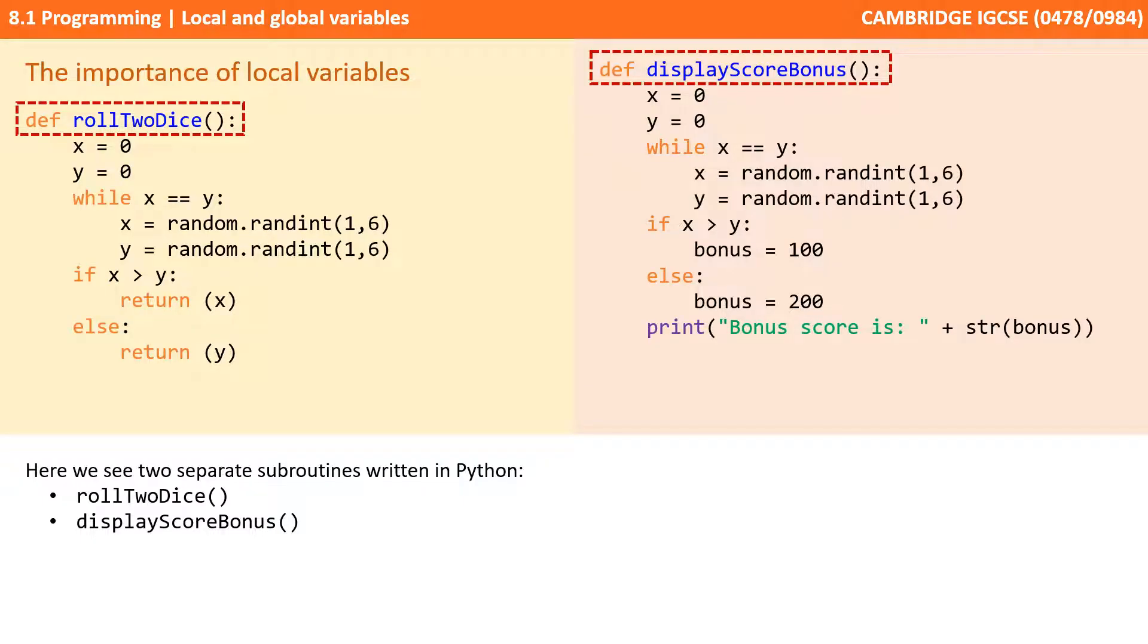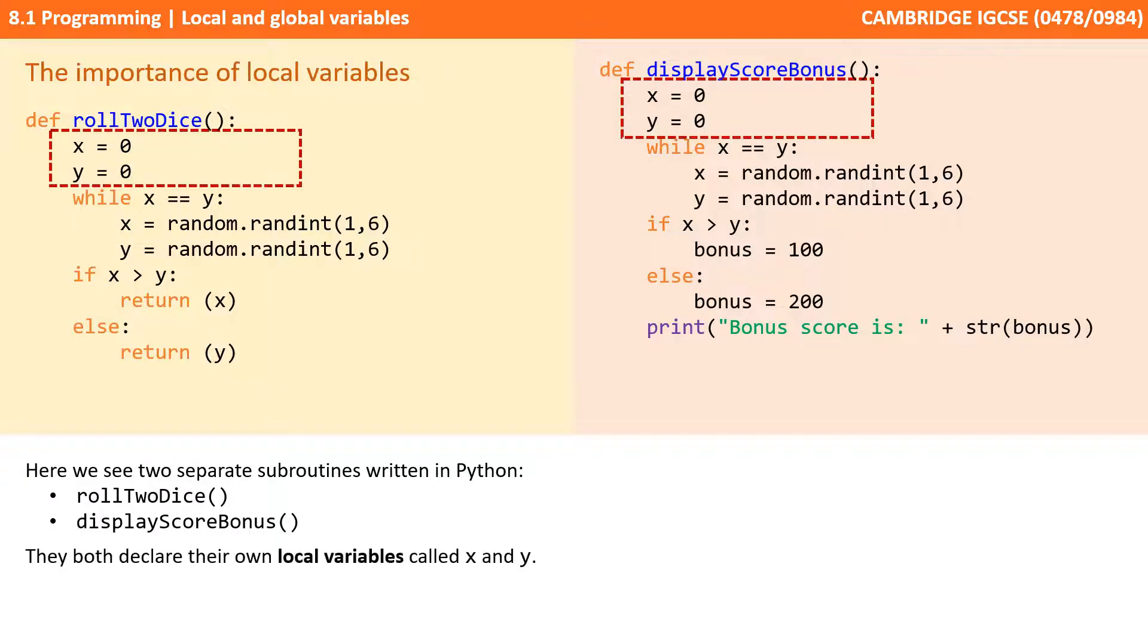Here, we see two separate subroutines written in Python: Roll2Dice and DisplayScoreBonus. They both declare their own local variables called X and Y.